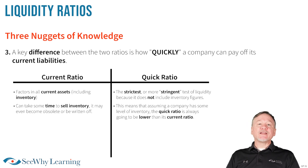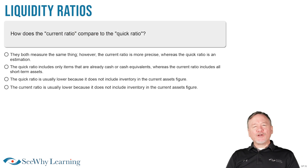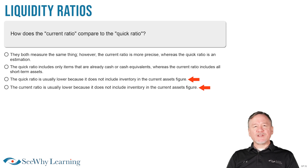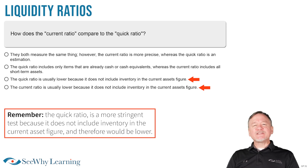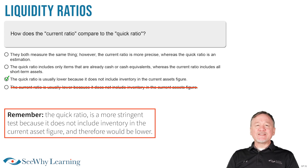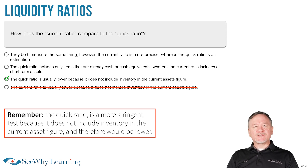With all this in mind, let's circle back and tackle the actual question. If you look at answers C and D, they're saying completely opposite things. When two answers completely contradict each other, I'd encourage you to look closely at those answers, as there's usually a good chance one is wrong and the other is right. As we already discussed, the quick ratio is a more stringent test because it does not include inventory in the current asset figure and therefore will be lower. So I'm going to flag answer C as correct and answer D as incorrect. But to be sure, let's see if the other answer choices can be eliminated.